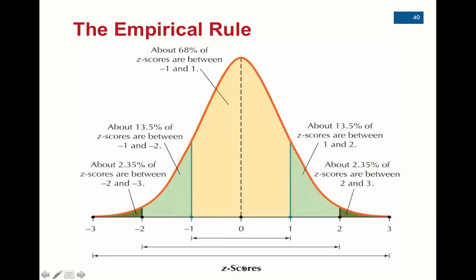What they're saying here is here's the normal distribution. The mean, remember the z-score for the mean is zero. And notice that's right here in the middle for the bell shape along with the median and the mode are all in the same spot.